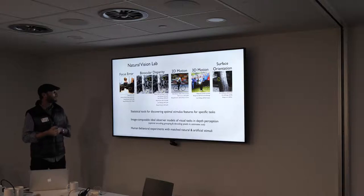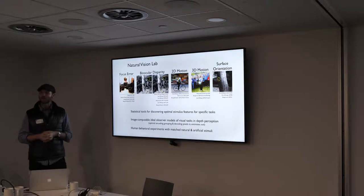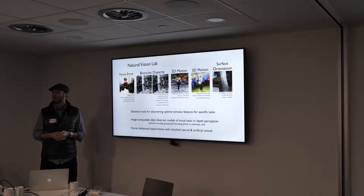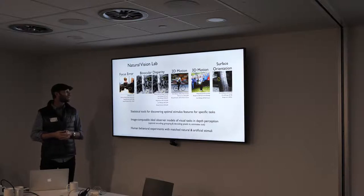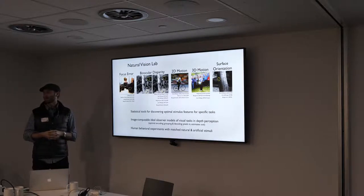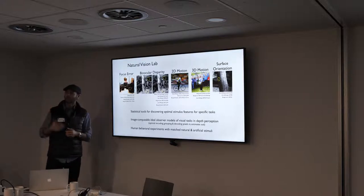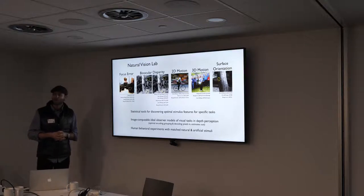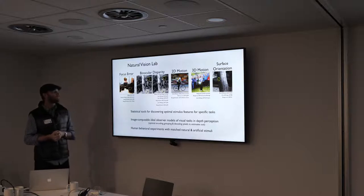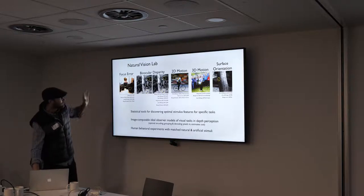One notable result from this line of work: we showed that you can very accurately estimate whether a lens was in focus or out of focus when an image was taken from just a single image. If you take a small patch of image, you can work out exactly how out of focus or in focus the lens was when the photograph was taken. This has implications for how the eye accommodates and how blur might be used as a cue to depth in natural scenes. We've done similar analyses for binocular disparity and other cues.